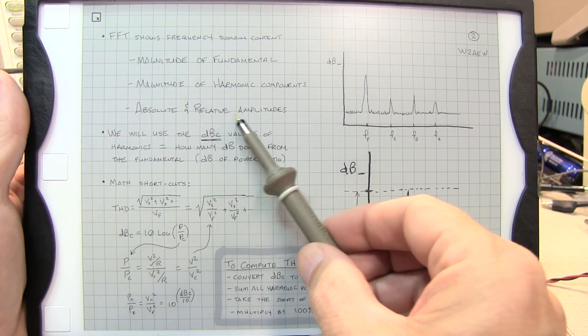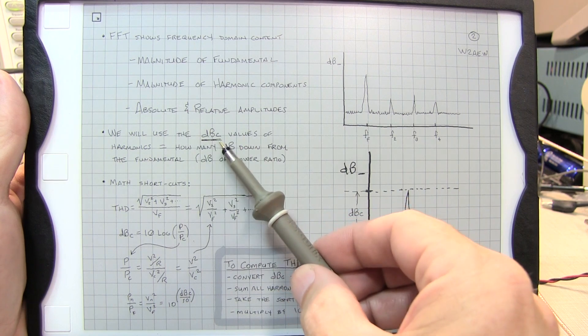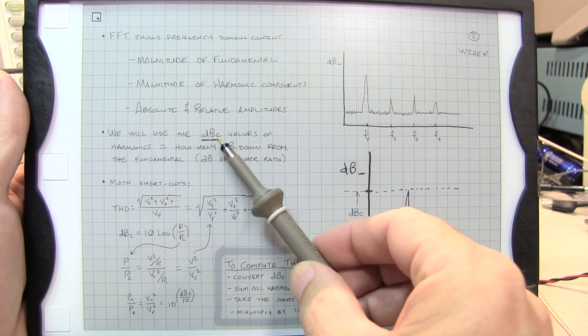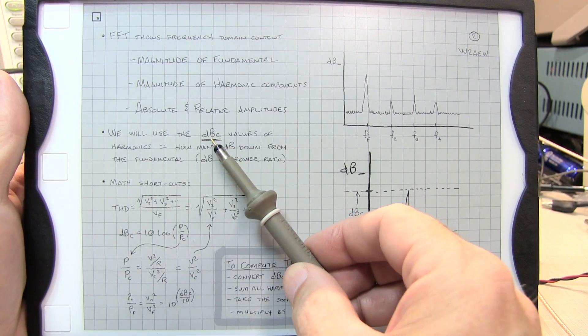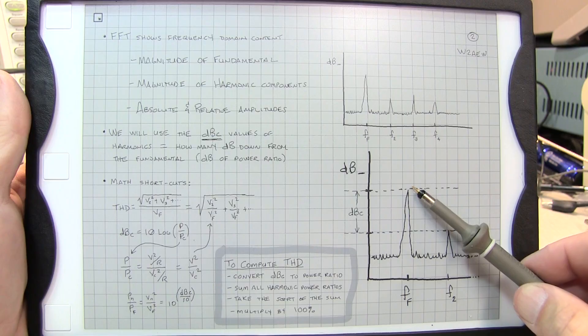When we talk about relative amplitudes, we're going to use a term called dBc, or decibels with respect to a carrier. Or in our case, it's really going to be dB with respect to the fundamental.